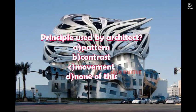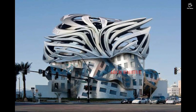The next question is about a building: which design principle is used? Options are movement, rhythm, contrast, or none of these. We can see a rhythm in the pattern of the building, contrast in the shades of black and white, and also a movement effect. These are probable questions where multiple options seem to fit, but we should stick to one specific answer. The most correct option here is movement.